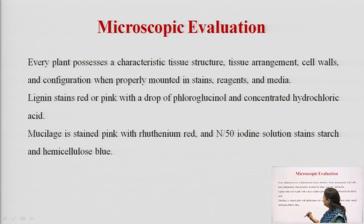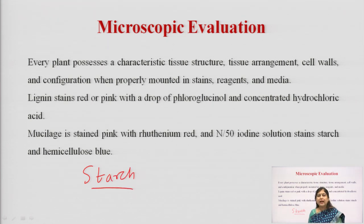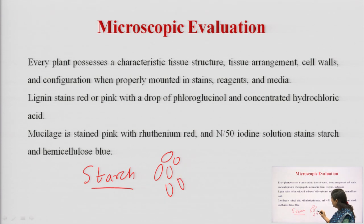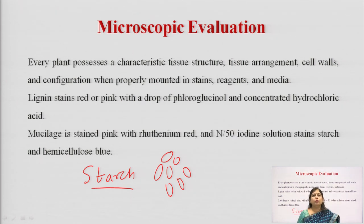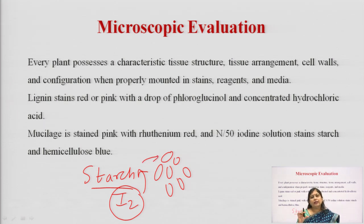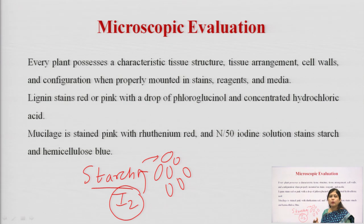For example, in school you must have done the identification of starch: if you take a potato piece, add iodine solution, and view it under the microscope, inside the potato section you will see many oval-shaped starch grains which stain blue due to the iodine. We have added iodine to potato and seen it under the microscope — it gives a blue-black colour. This type of chemical test done using the microscope is called a micro-chemical test.